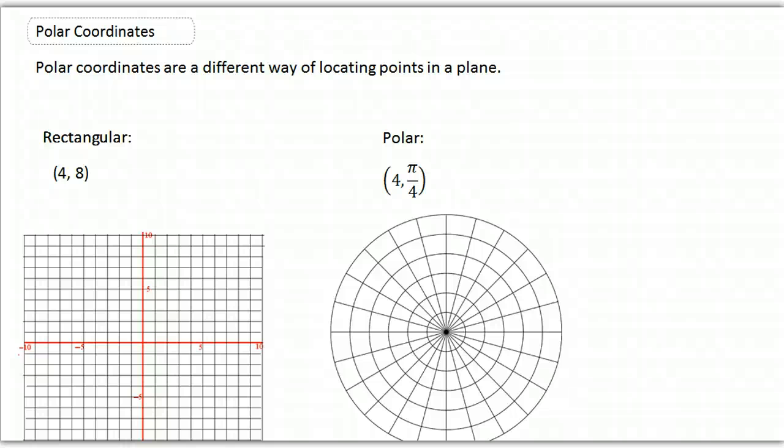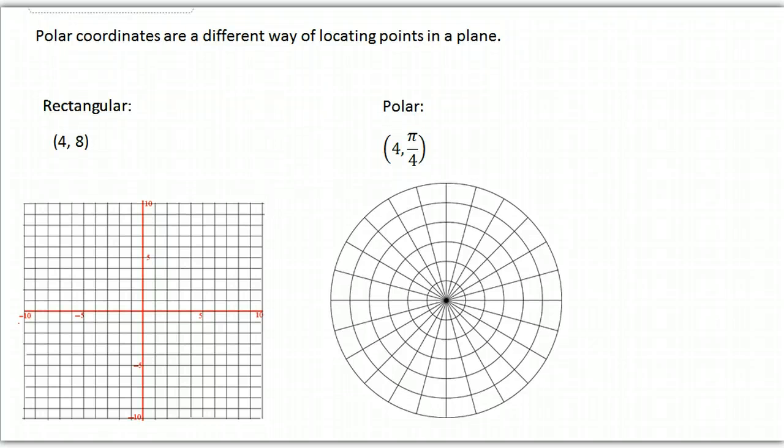Okay, polar coordinates are just a different way of locating points in a plane. Now you're probably familiar with doing rectangular coordinates where if you have a point (4,8), you go out 1, 2, 3, 4 in the horizontal direction, then you go up 8 in the vertical direction, and there's your point (4,8).